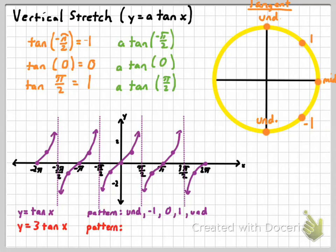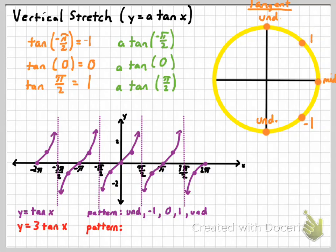What I need to remind you of is the pattern that occurs whenever you're working with y equals tangent x — the cycle and the values we actually graph. We made the cycle from negative pi over 2 to positive pi over 2. That's where two vertical asymptotes are, and you get a complete cycle of values in between. We use three values: the tangent of negative pi over 4, which is negative 1; the tangent of 0, the mid value, which is 0; and the tangent of positive pi over 4, which is equal to 1.